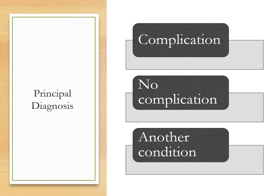Next: admission from outpatient surgery. When a patient is receiving surgery in the outpatient surgery department and is subsequently admitted for continuing inpatient care at the same hospital, there are three considerations. First, if the inpatient admission is for a complication, the complication is sequenced as principal. Second, if there is no complication or other documented reason for the admission, assign the outpatient surgery condition as the principal diagnosis. Third, if the patient is admitted for a condition unrelated to the surgery, assign that unrelated condition as principal. Always remember that codes paint the picture of the care provided, and we want the insurance company to know why the patient was admitted.